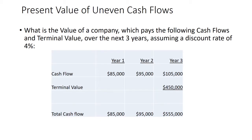That's the net present value of a series of cash flows. I would be willing — if I'm using a discount rate of 4% — to pay $663,000 for this company, if my weighted average cost of capital was 4%.